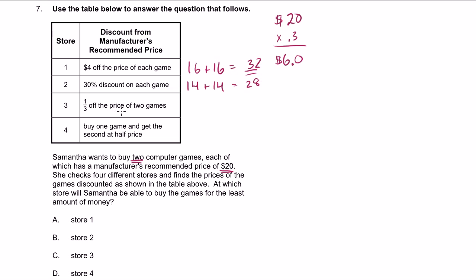1/3 off the price of the two games. Well, you could immediately say that 1/3 is 33%. So that's a bigger discount than this one. You could do the math. You'll figure out, instead of this being $6, it'll be $6.66. And this is going to be $13 and something, plus $13 and something. And you're going to get $27 and some change. But you know that this is a better deal than this one, because this is the same thing as 33% off, which is clearly better than 30% off.